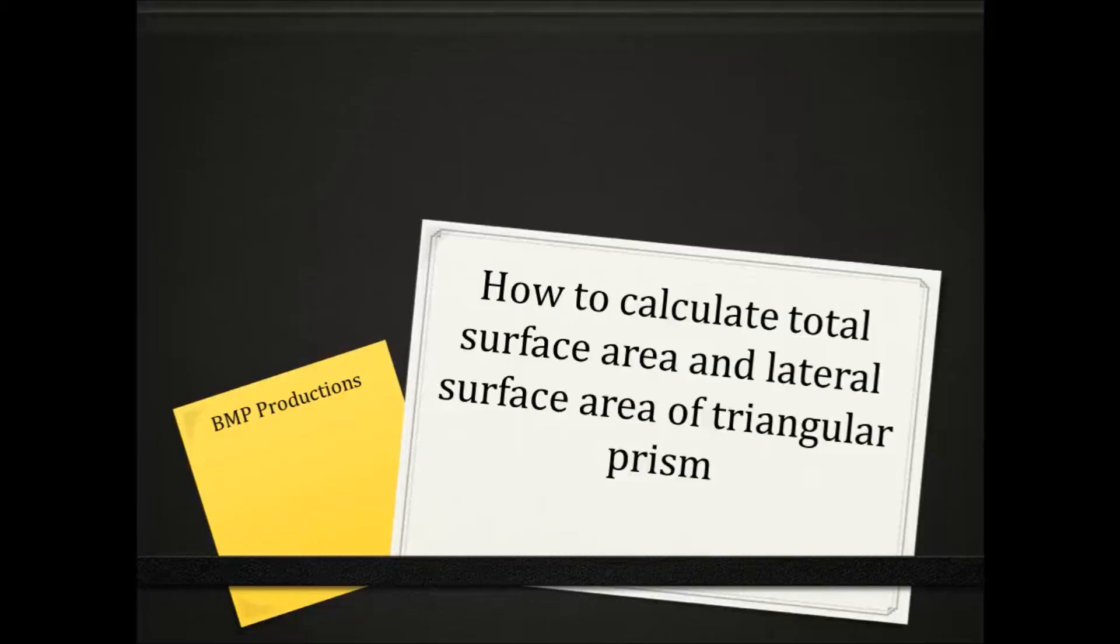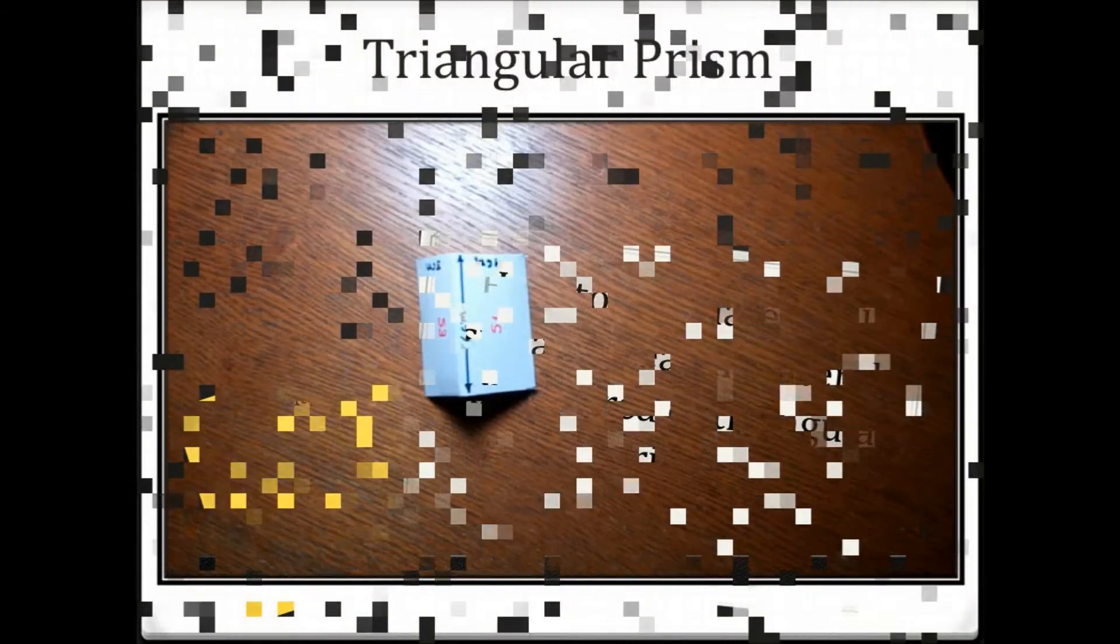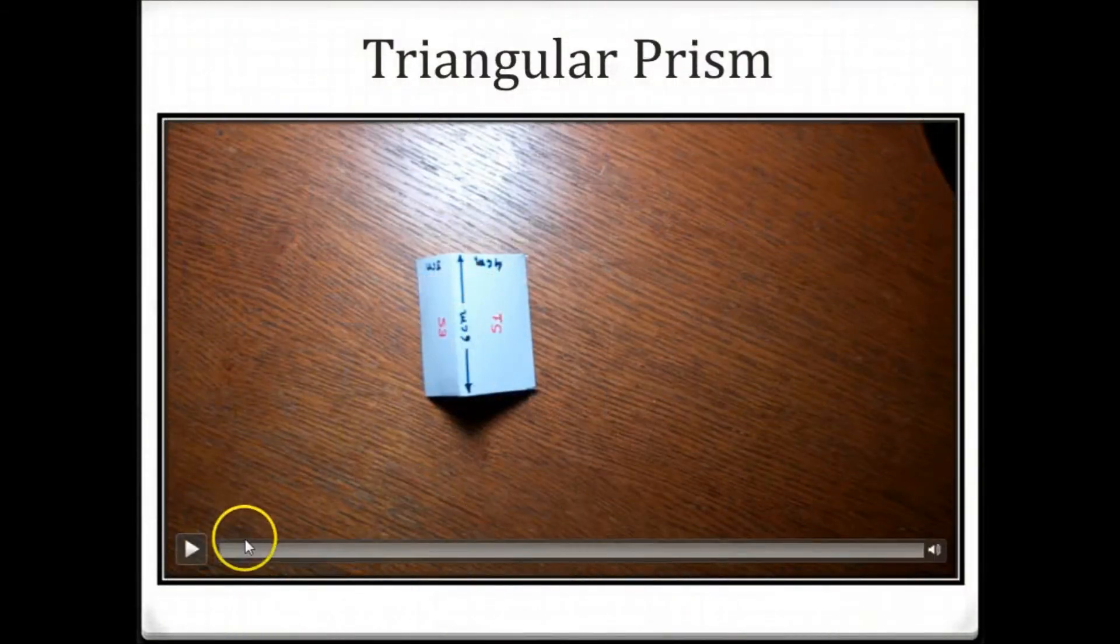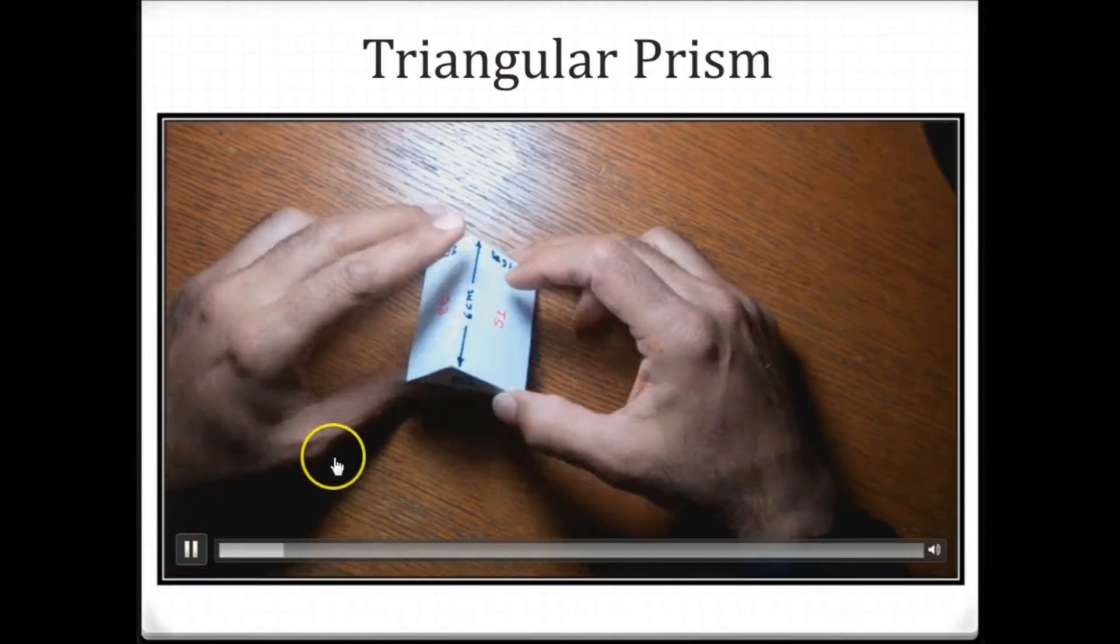Hey, hi everyone. This is about how to calculate total surface area and lateral surface area of a triangular prism. So here I have a small video clip. Let me run it. So this is what it looks like.